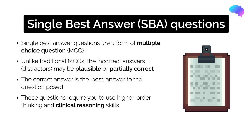A single best answer question is a form of multiple choice question where you are presented with a scenario, followed by a question and then several options to choose from. However, unlike traditional MCQs, in a single best answer question some of the incorrect answers, which we call distractors, may be plausible or partially correct.